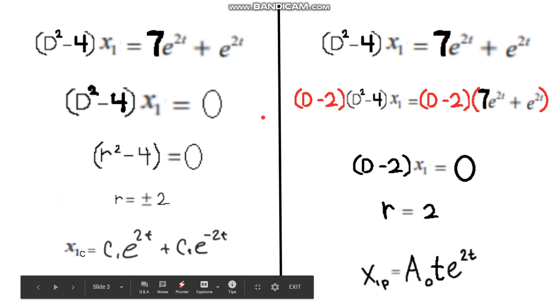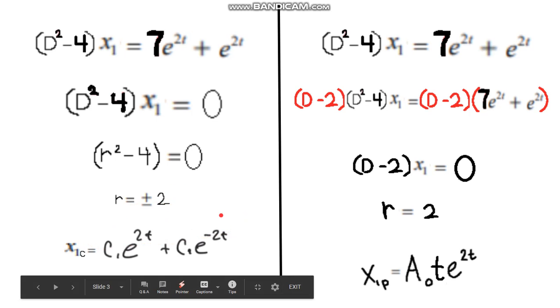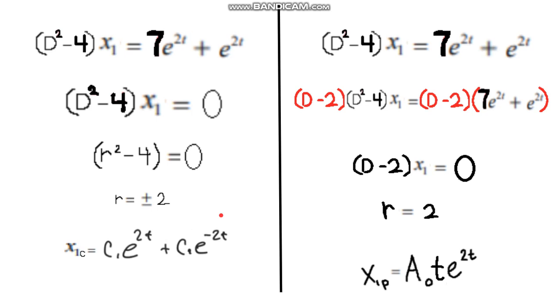Now, we're going to be solving for the homogeneous case, and then particular. So here we have (D^2 - 4)x1 is equal to 7e^(2t) plus e^(2t). We set this side to 0 to solve for the homogeneous, and pretty simple. We get r is equal to plus or minus 2. Write that as your complementary solution for x1.